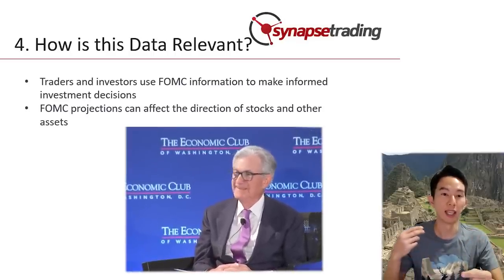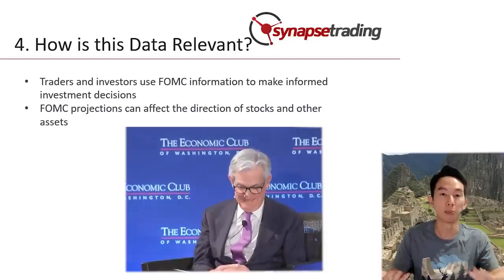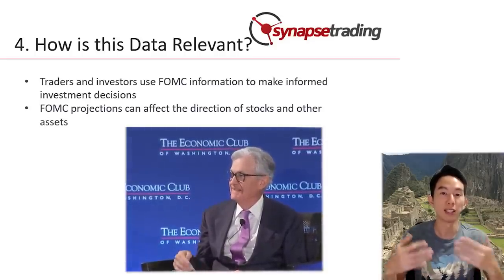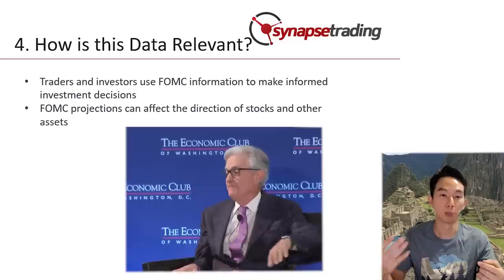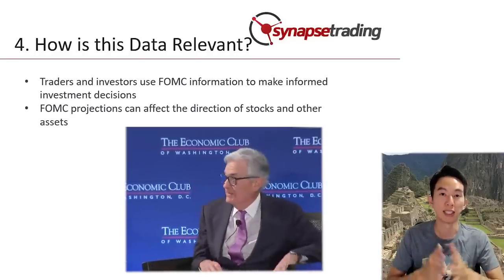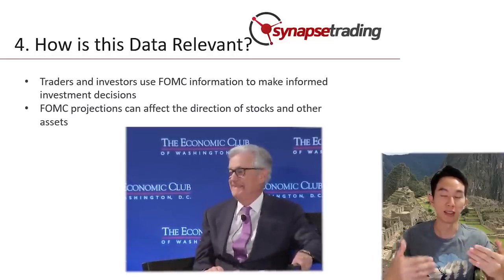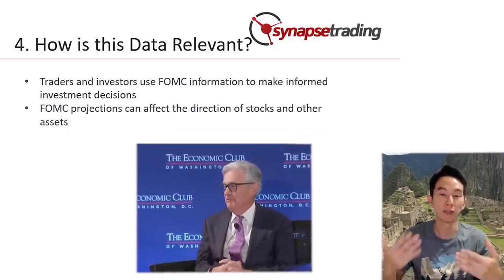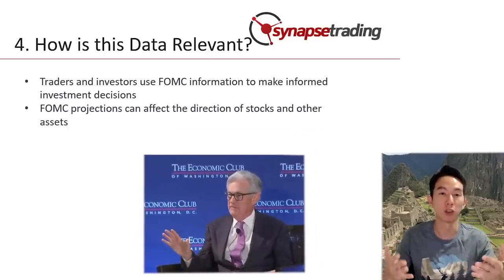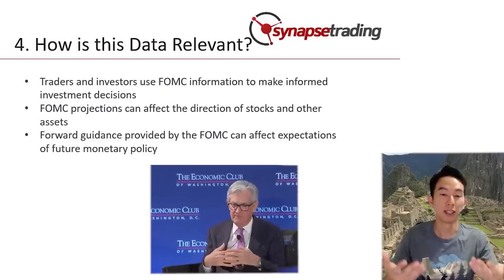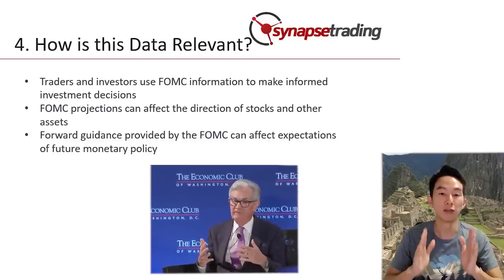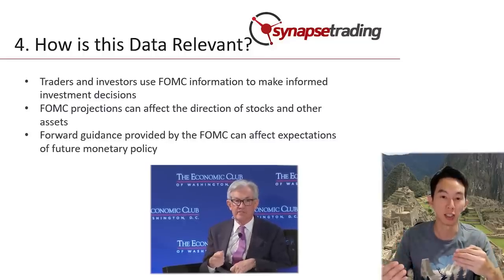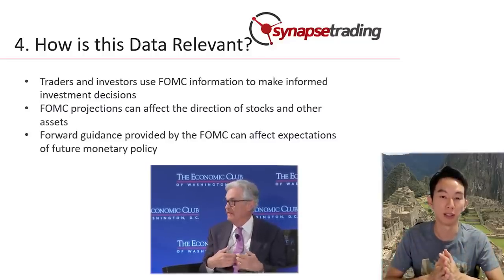For example, if the FOMC projects that the economy will perform well in the future, then traders and investors are more likely to invest in stocks, as they expect the market to perform well. On the other hand, if the FOMC projects that the economy will perform poorly, then traders and investors will be more likely to invest in bonds, as they expect the market to be more stable. Traders and investors also pay attention to the forward guidance provided by the FOMC, because it affects expectations of future monetary policy.